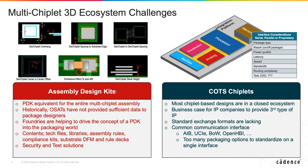Assembly design kits are very similar to a PDK or process design kit used in IC design. When designing a chip and going to the foundry, they provide a PDK with technology information, material properties, libraries of IOs and standard cells, sign-off decks for DRC, LVS, and metal fill — the data a chip designer needs to be confident that what's designed in the CAD tool can actually be manufactured. We don't have that in advanced packaging. Packaging has been the 'wild west' with lots of iteration between design teams at semiconductor companies and OSATs. OSATs have huge design centers to help iterate because there is no formal kit equivalent to a PDK on the chip side.